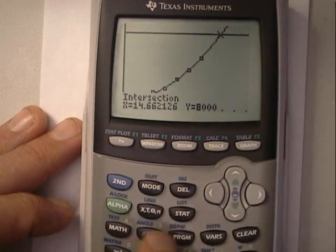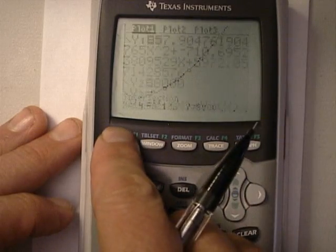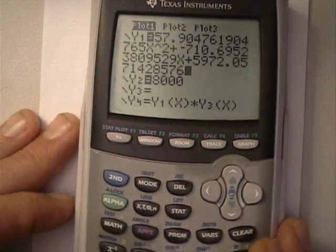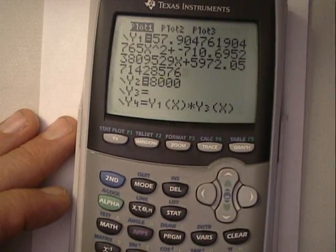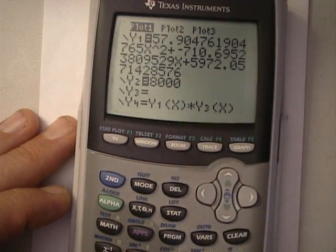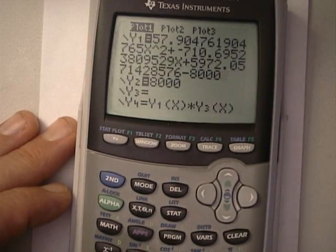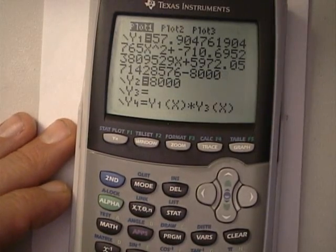So here, once again, I'm going to go into the calculator and do something tricky. Instead of actually subtracting $8,000 out by hand from the equation, I'm just going to write minus $8,000 right there in Y1. I just subtracted it.